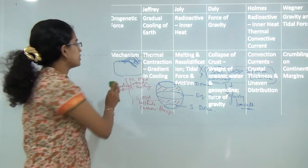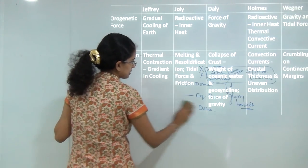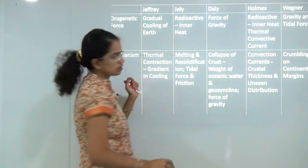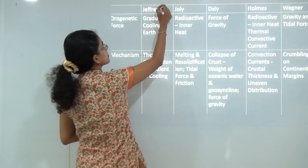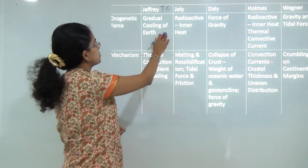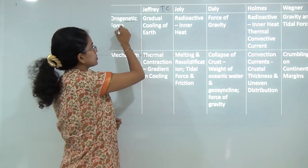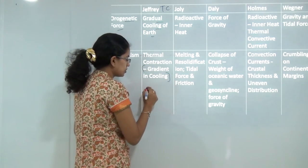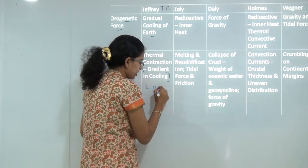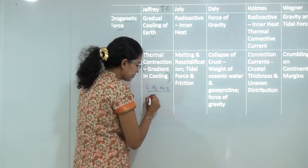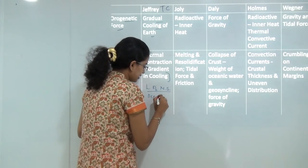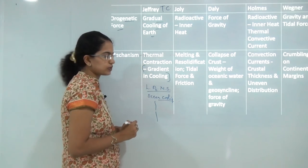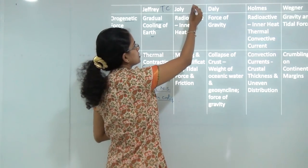Now we come to a comparative analysis of the five theories discussed. First, Jeffreys' thermal contraction theory: the main orogenetic force was gradual cooling of the earth. He talked about the gradient in cooling, the concept of level of no strain, cooling of oceans at a faster pace compared to landmass, and the origin of north-south mountains.